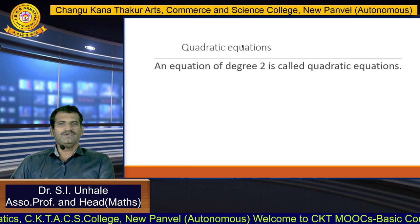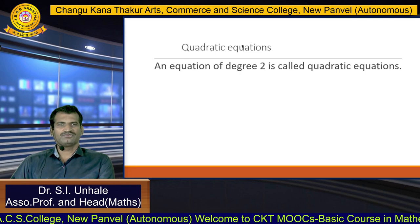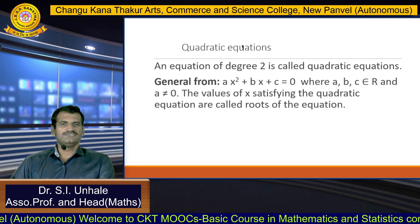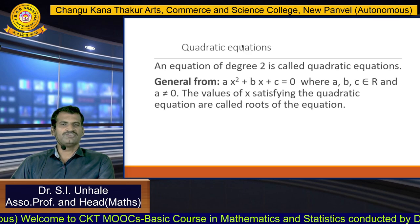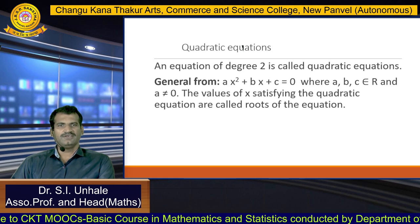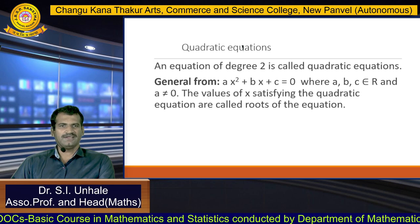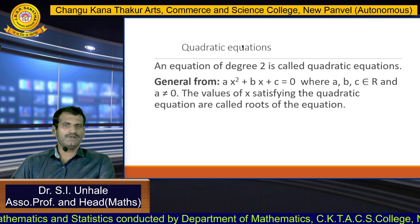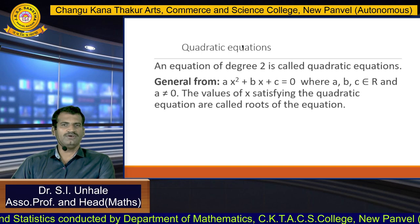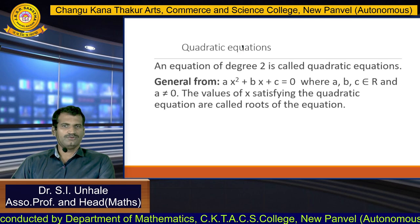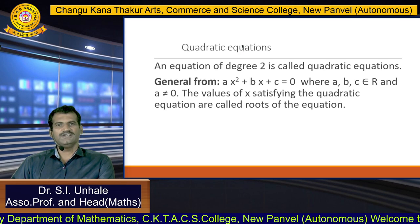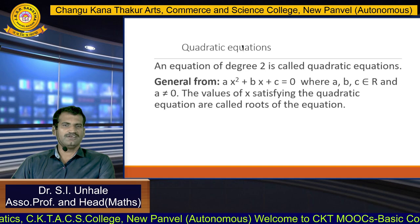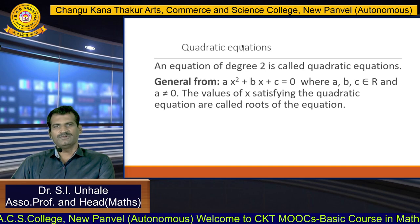In a similar way, we define the quadratic equation. An equation of degree 2 is called a quadratic equation. The general form of the quadratic equation is ax² + bx + c = 0, where a, b, and c are real constants and a must be non-zero. The value of the variable x satisfying the given quadratic equation is called a root of the equation.